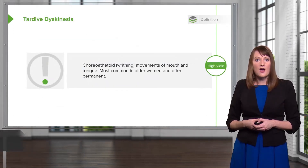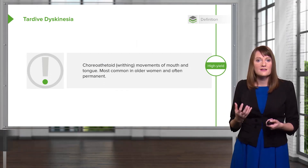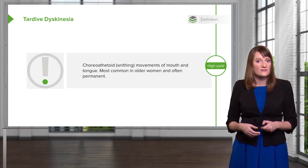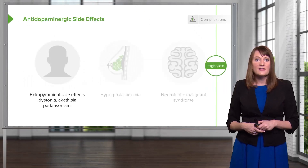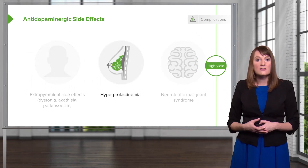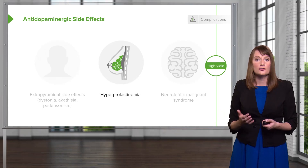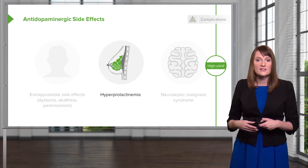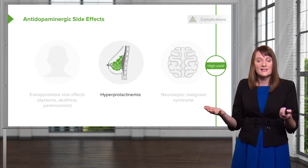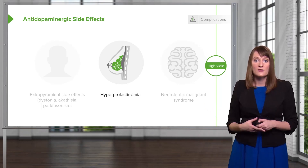Regarding tardive dyskinesia, another pearl to know: this involves writhing movements of the mouth and tongue — when your patient is described as having that, think tardive dyskinesia. The antidopaminergic side effects include extrapyramidal symptoms and also hyperprolactinemia, due to interference of dopamine in the tuberoinfundibular pathway. Patients can end up with so much dopamine blockade that they get a surge in prolactin, and this can manifest as lactation from the breast — it can occur in women but also in men.